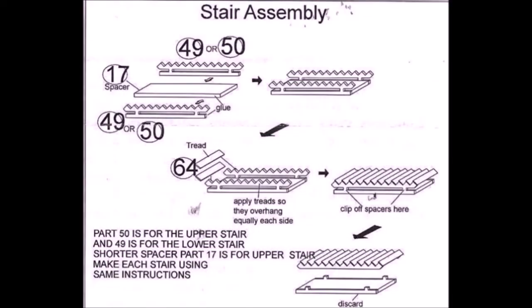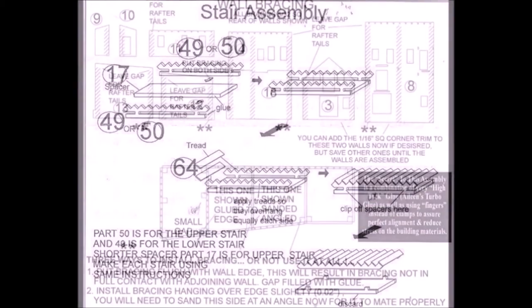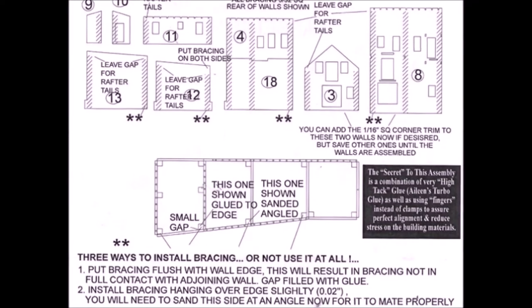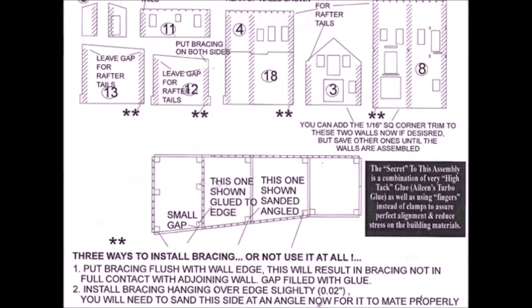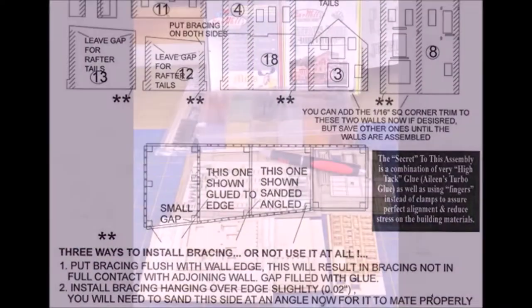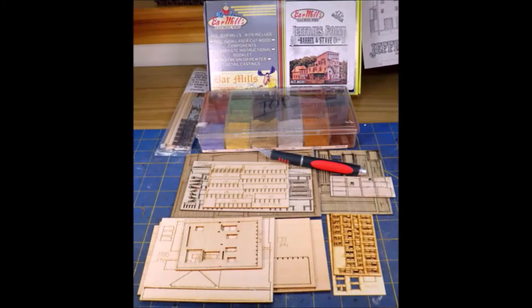They give you a number of different signs that you can put on your structure. Now you really do have to read the directions and really follow what they're telling you to do, because sometimes it just won't go together correctly if you don't. Now most all of these box type structures are square or rectangular. Look here, this is not a square or rectangular building.